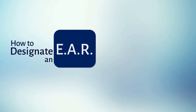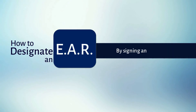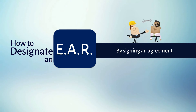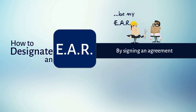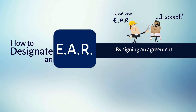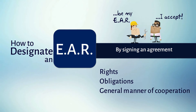To designate an EAR, the manufacturer and the EAR sign an agreement which essentially says: 1. Manufacturer, you will be my authorized representative in Europe, and 2. European Authorized Representative, I accept to be your European Authorized Representative. In addition to the agreement, you will need to mention the rights and obligations of each party and the general manner of cooperation.